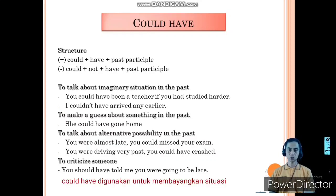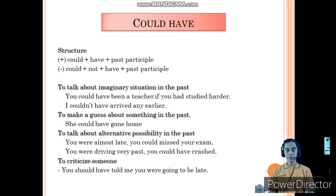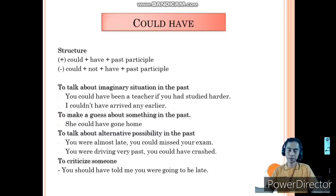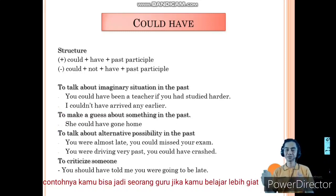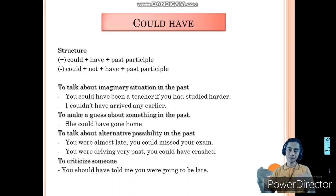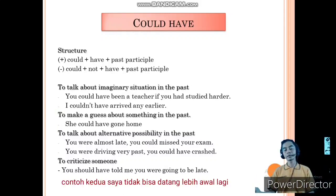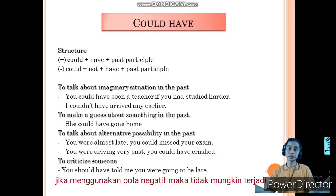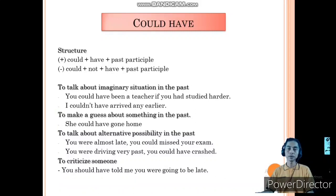We use could have to talk about imaginary situations. If we use the positive structure, it means it is possible to happen, even though at the time of speaking it didn't happen. The example is: 'You could have been a teacher if you had studied harder.' At that time, I haven't been a teacher because I didn't study really hard. The second example: 'I couldn't have arrived any earlier.' If we use the negative, it means it is impossible to happen. This is the earliest I can arrive — I cannot arrive any earlier.